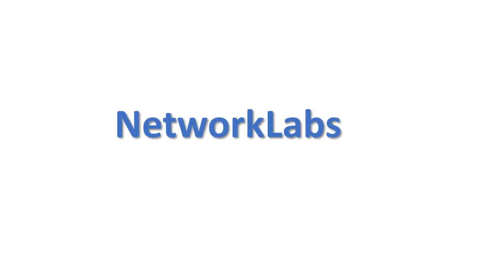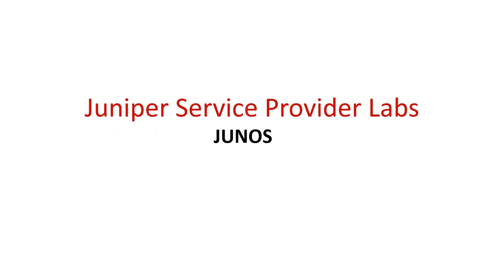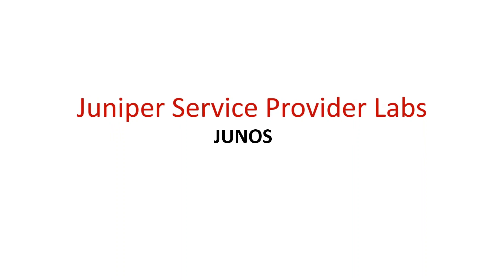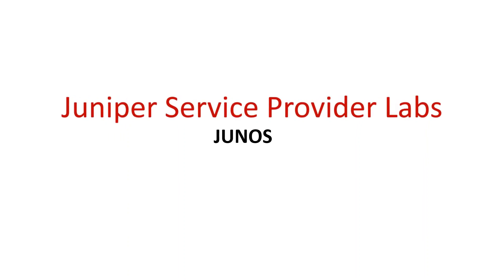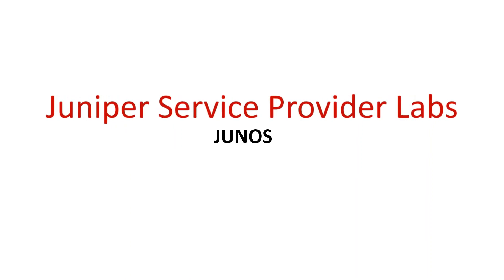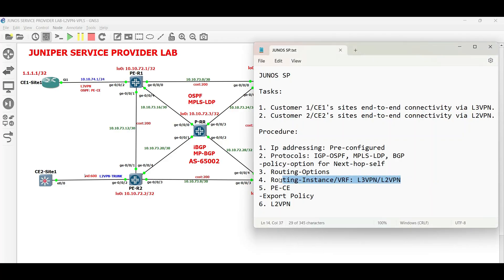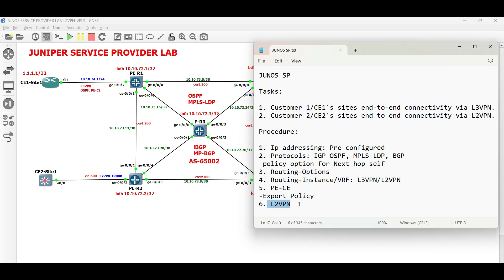Hello everyone and welcome to Network Labs. Today in this video, we will continue our service provider lab using Juniper routers. After completing Layer 3 VPN, let us now proceed with Layer 2 VPN for our second task. Here, we will deploy Layer 2 VPN via VPLS.